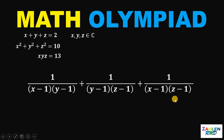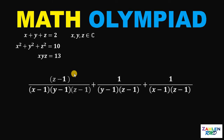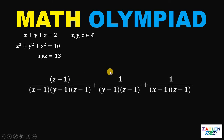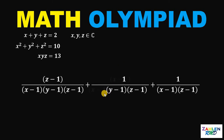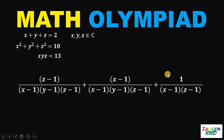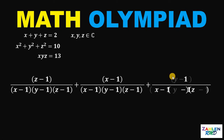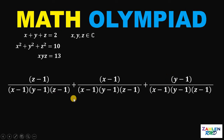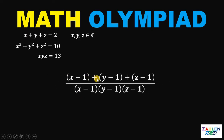Now let's combine these three fractions. Before that, we need the same denominator. Multiply the first term by (z minus 1) over (z minus 1), the second term by (x minus 1) over (x minus 1), and the last term by (y minus 1) over (y minus 1). Since we now have the same denominator, we can combine them to get: (x minus 1) plus (y minus 1) plus (z minus 1), all over (x minus 1)(y minus 1)(z minus 1).